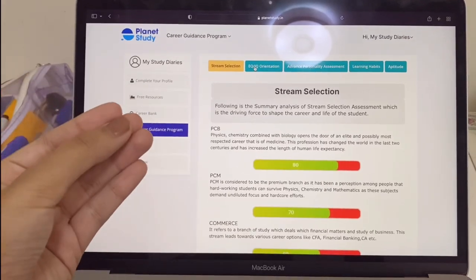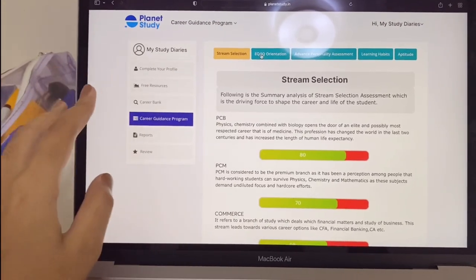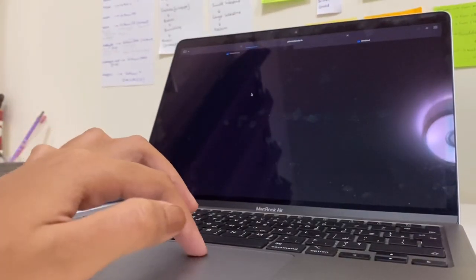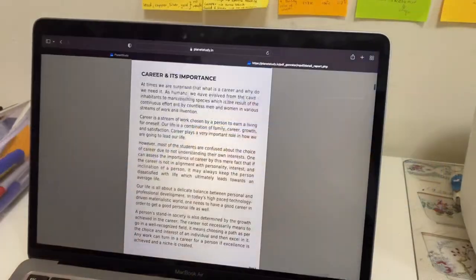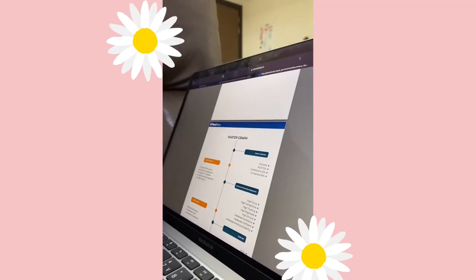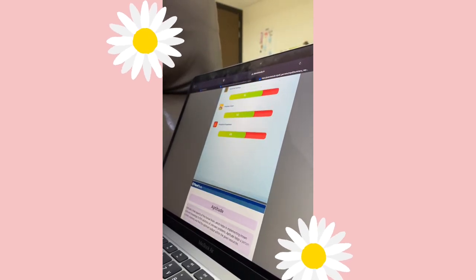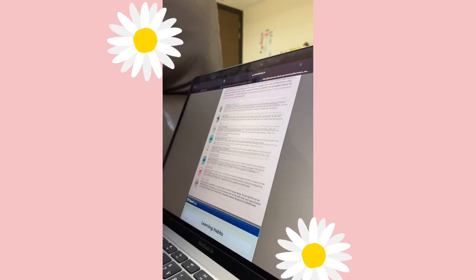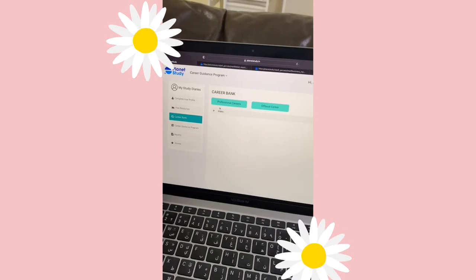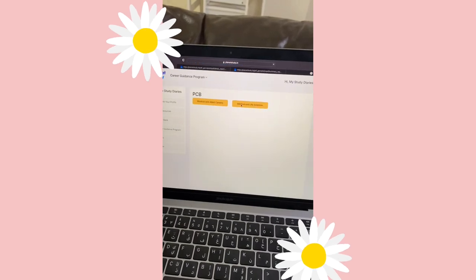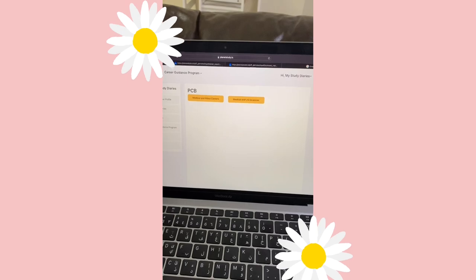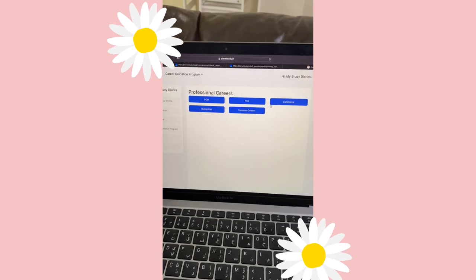After you complete the assessment, you can simply download the detailed report and read through it to understand what career suits you and really comprehend which career path will be best for you in the future. After finishing the test, I analyzed the report and showed it to my parents, and we went through all the different options. You can look according to the streams - PCB, PCM, commerce, humanities - and look into the career options for each stream.